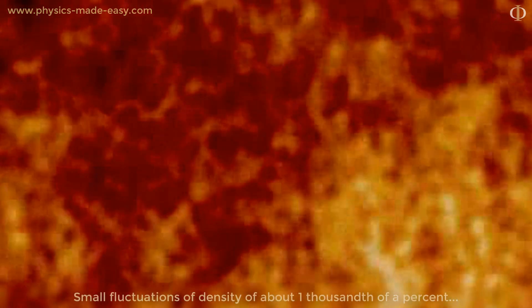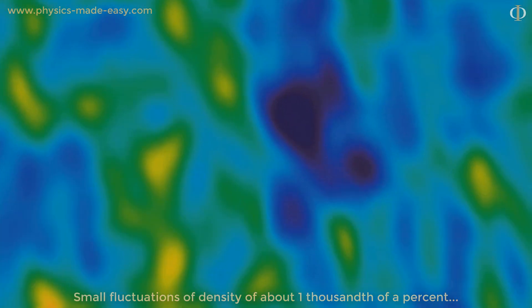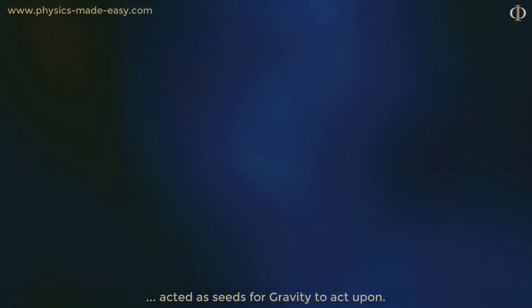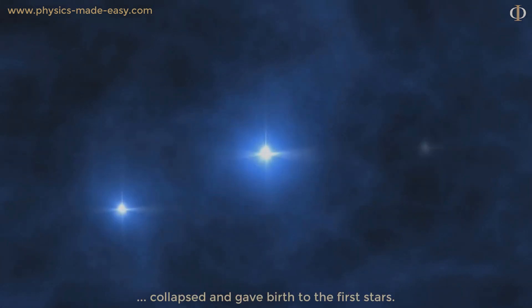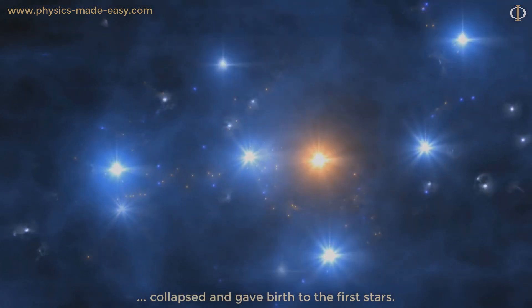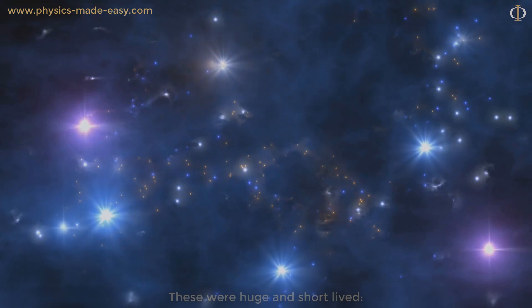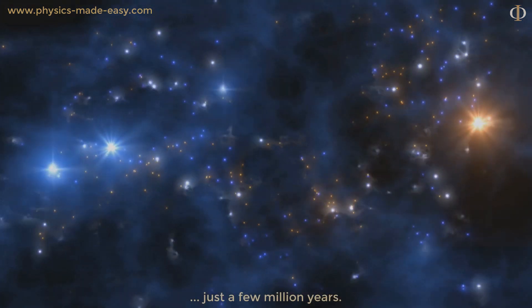Small fluctuations of density, of around one thousandth of a percent, acted as seeds for gravity to act upon. Soon, the gas clouds composed of hydrogen and helium atoms collapsed and gave birth to the first stars. These were huge and short-lived, just a few million years.